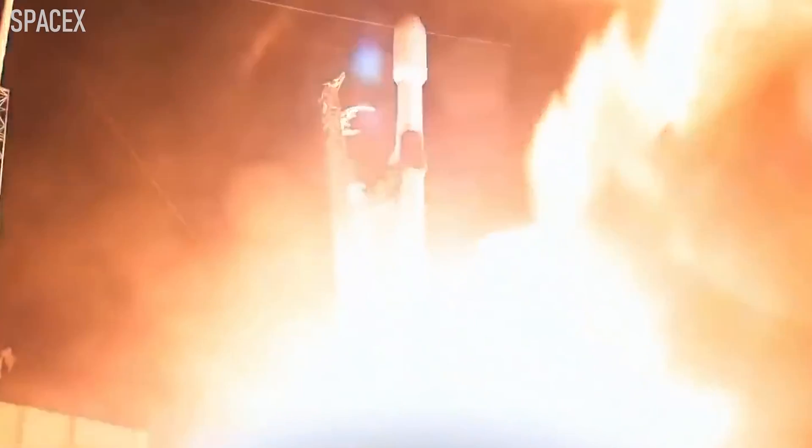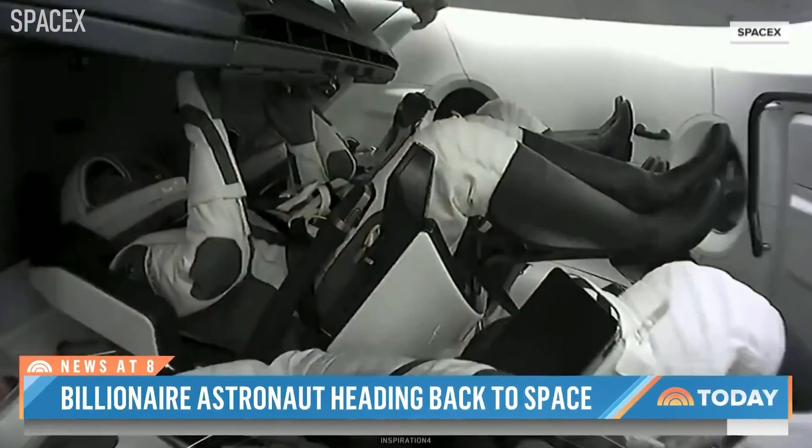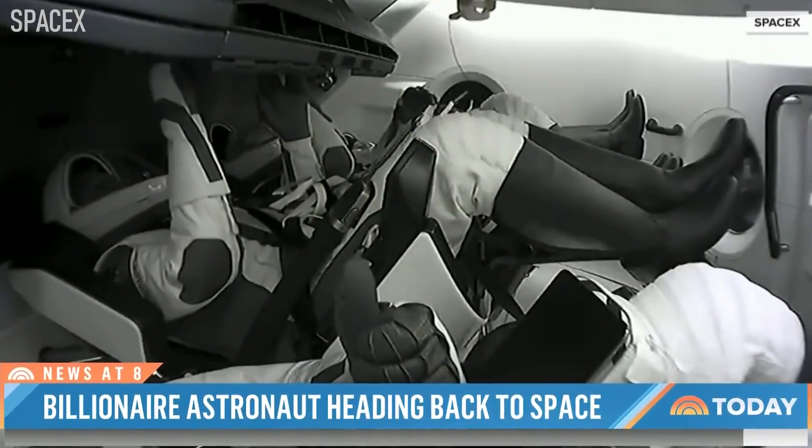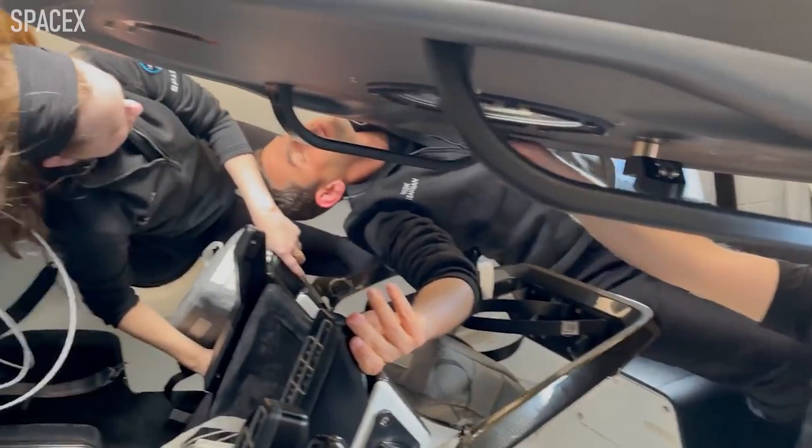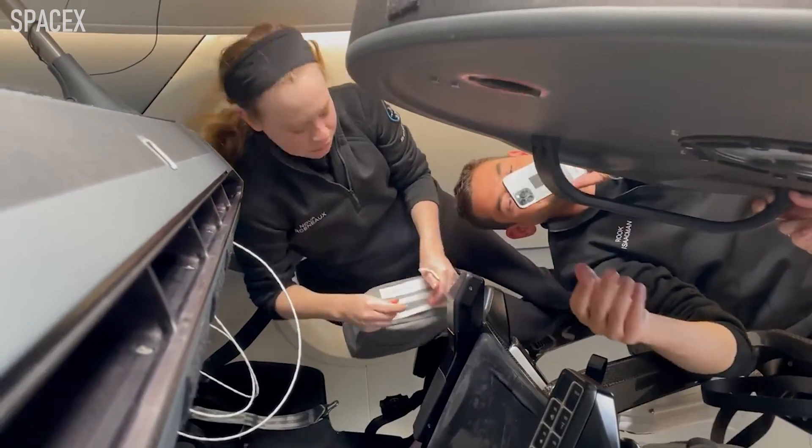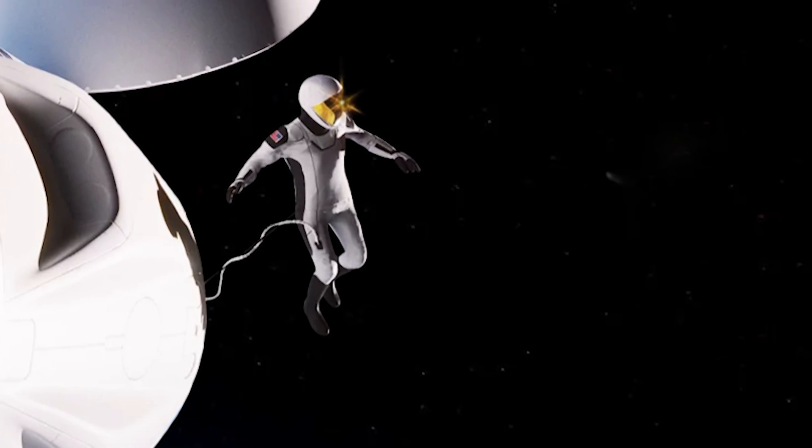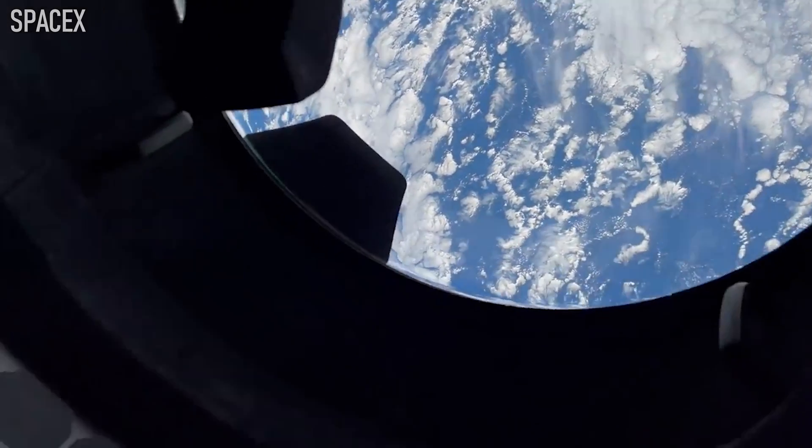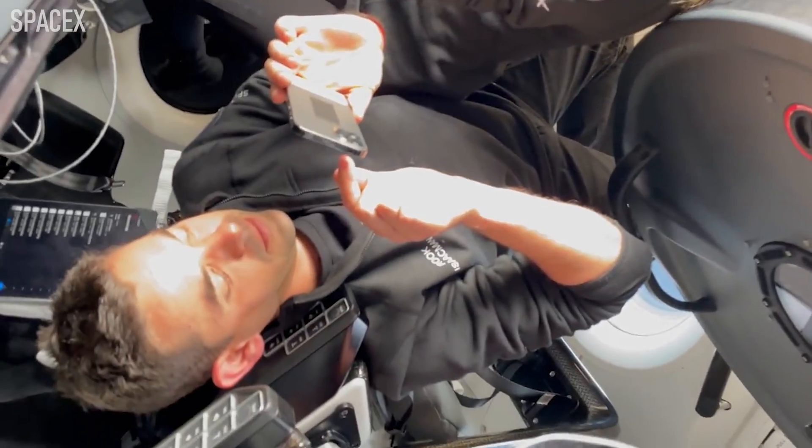Earlier on the horizon, SpaceX has a major mission planned for later this year. Polaris Dawn is the first of three privately purchased missions from Shift 4 Payments CEO Jared Isaacman. The first mission will take Jared and three other crew members up to Earth's orbit for five days aboard the Crew Dragon. During the trip, they'll break a couple of records, including conducting the first commercial spacewalk to test SpaceX's new EVA suits, as well as trying to beat Gemini 11's record for highest Earth orbit ever flown by a crewed spacecraft.